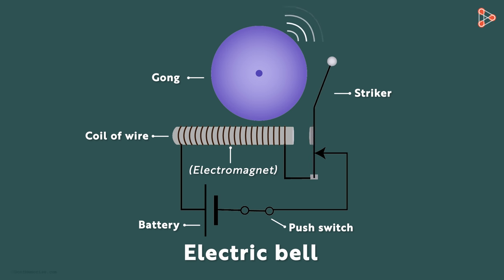This process will continue until the switch is open again. As soon as we release the push button, the circuit breaks and the bell stops ringing. That's the basic idea of how an electric bell works.